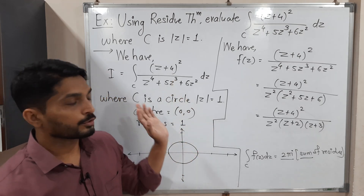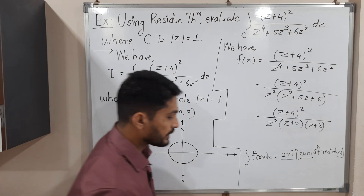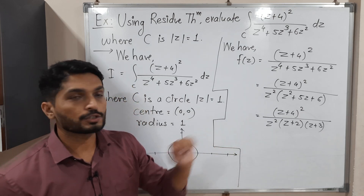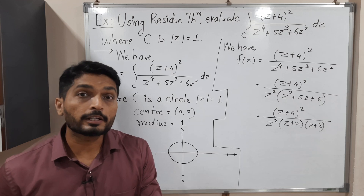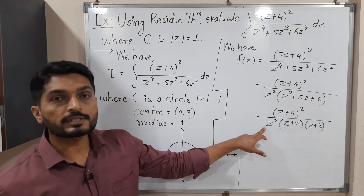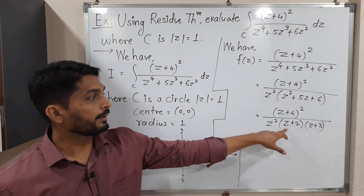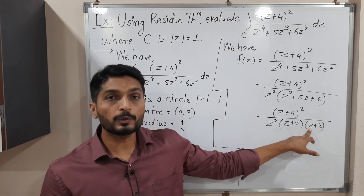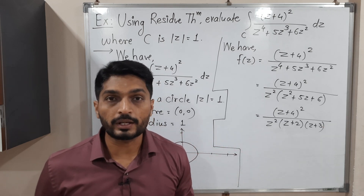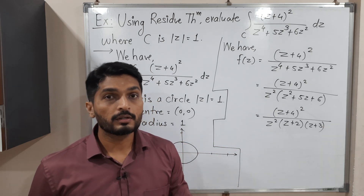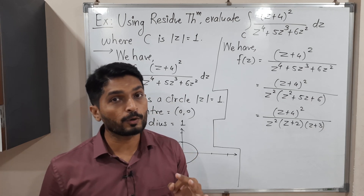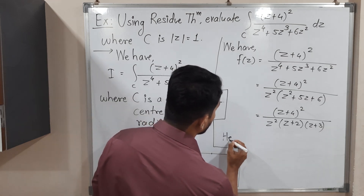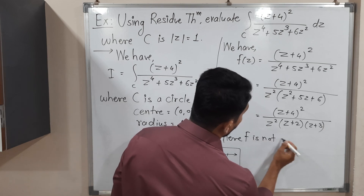Our next task is to find the residues — the singular points are where the denominator equals zero. If z = 0 we get 0 in the denominator; if z = −2 we get 0; if z = −3 we get 0. So z = 0, z = −2, and z = −3 are singular points where f is not analytic.